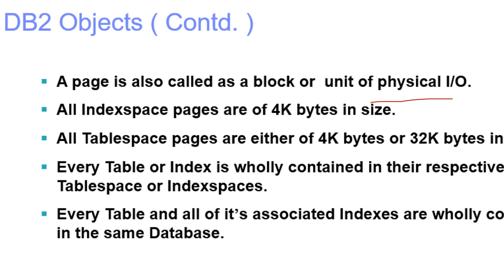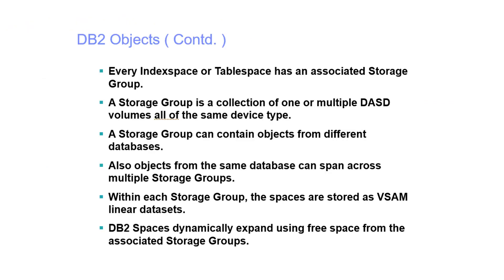All index space pages are 4 kilobytes in size, while table space pages are either 4 kilobytes or 32 kilobytes. Every table or index is wholly contained in its respective table space or index space, and every table and all its associated indexes are wholly coordinated within the same database.